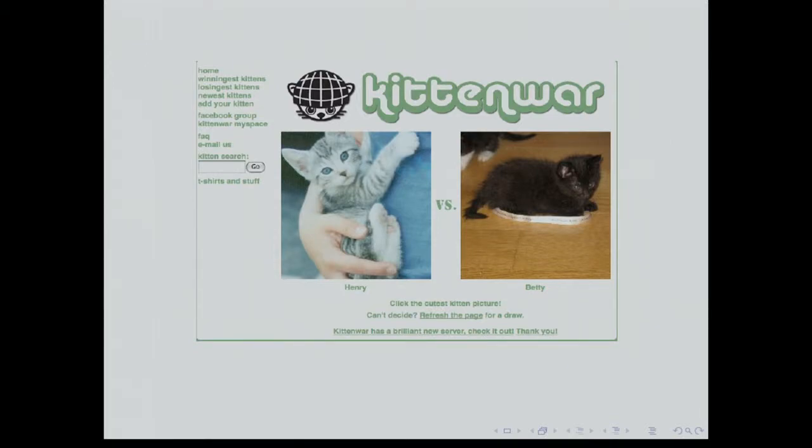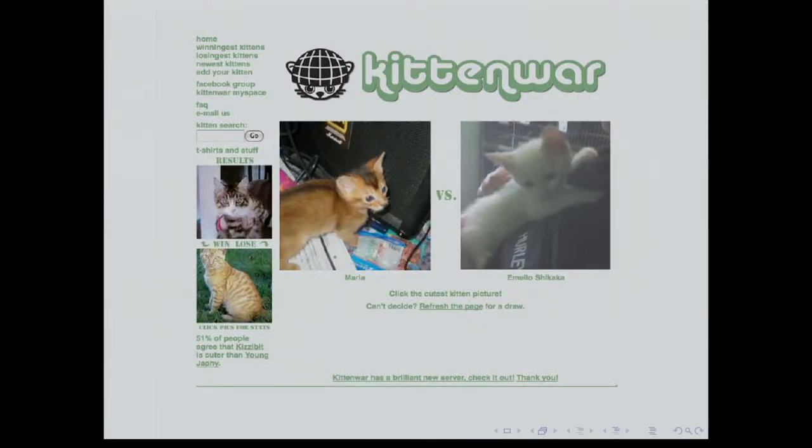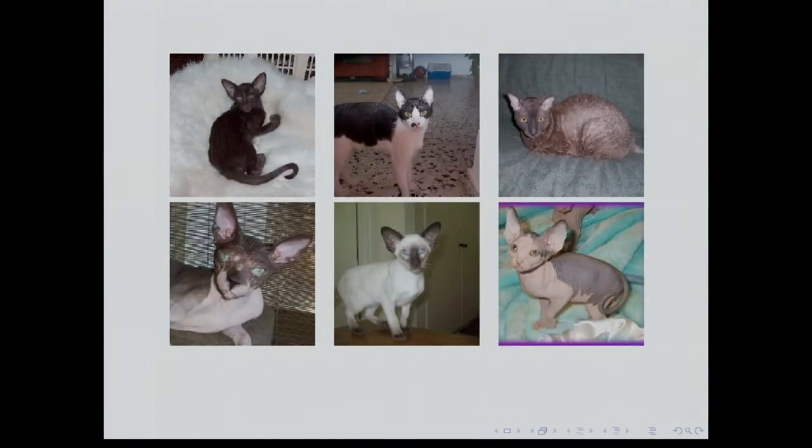If you go to kittenwar, this is what you will see. Please don't go to kittenwar now because you won't hear anything else I say. You click on one of these kittens, and then another pair of kittens shows up, and you click again, and you click again, and again, and again. And before you know it, you've spent 20 minutes clicking on kittens. In addition to being a fun way to spend time, there's something actually much deeper happening here. If you click to see the winningest kittens, this is what you see. It's pretty cute, I would say, in my opinion as a scientist. And if you click to see the losingest kittens, this is what you see. Very different.